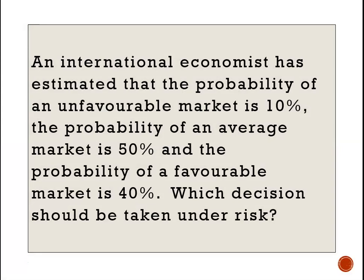The information for this section is normally presented like this. An international economist has estimated that the probability of an unfavorable market is 10%, the probability of an average market is 50%, and the probability of a favorable market is 40%. Which decision should be taken on the risk? So now we are going to be incorporating these probabilities into our payoff table.